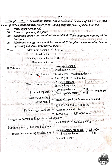Next, we find the installed capacity. The formula uses the plant capacity factor: installed capacity equals average demand divided by plant capacity factor. So 12,000 divided by 0.48 gives us 25,000 kilowatts. That is the installed capacity of the plant, which is 25,000 kilowatts.